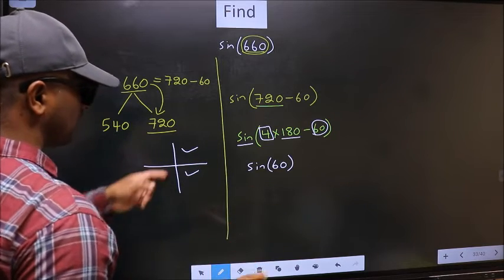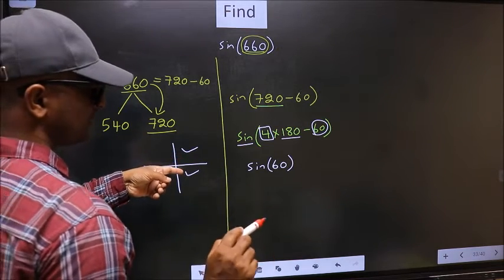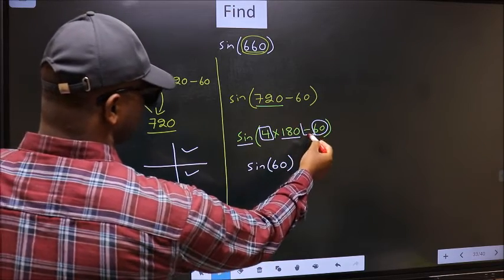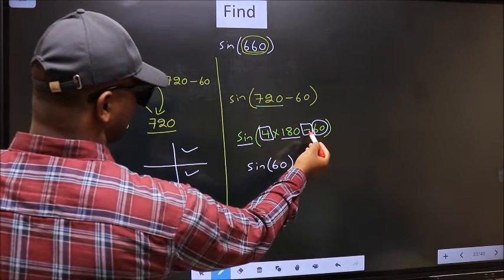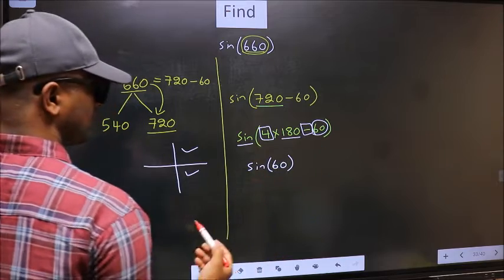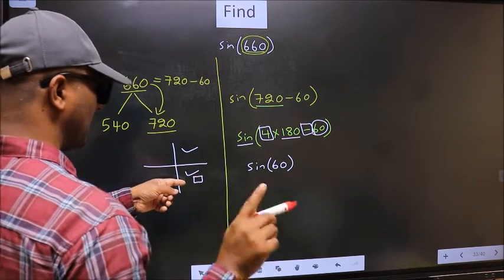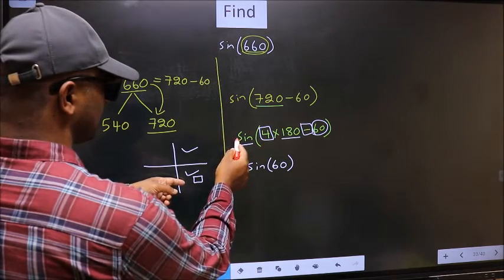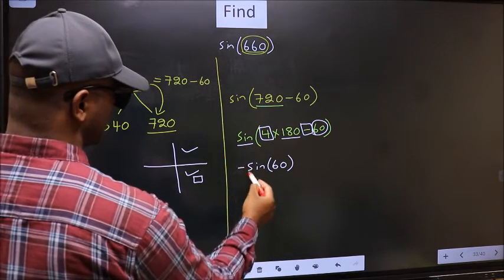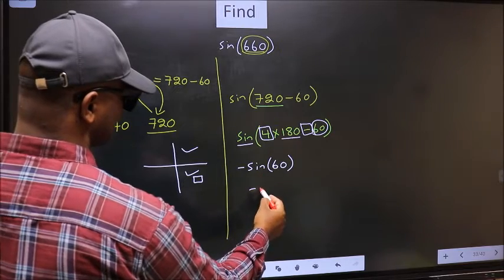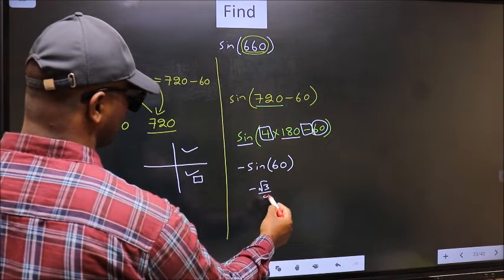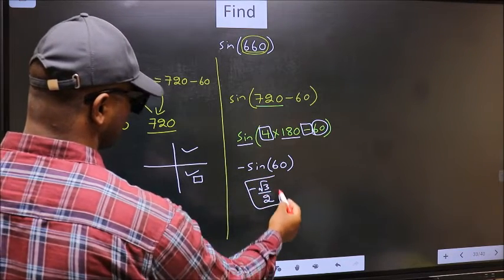So now to select the quadrant, we should look at this symbol. Here we have negative. That means the angle lies in the fourth quadrant. And in the fourth quadrant, sin is negative. So we should put negative. So negative sin 60 is root 3 by 2. This is our answer.